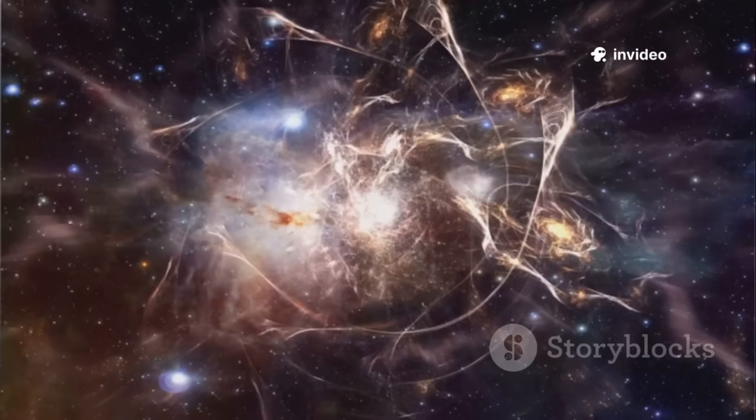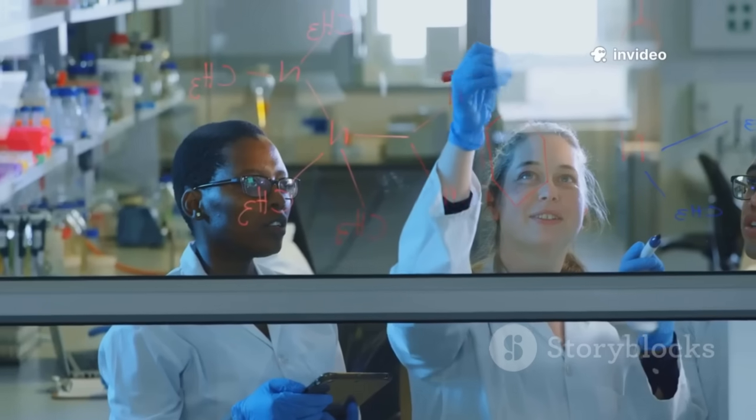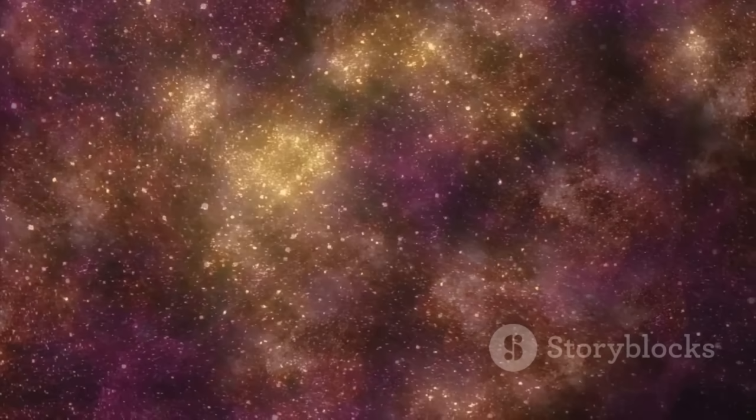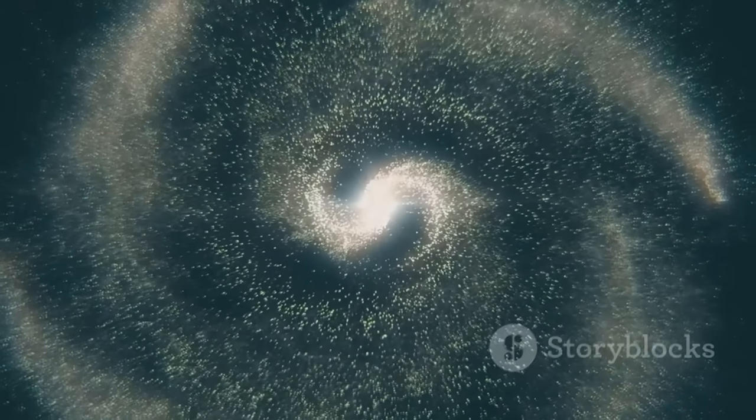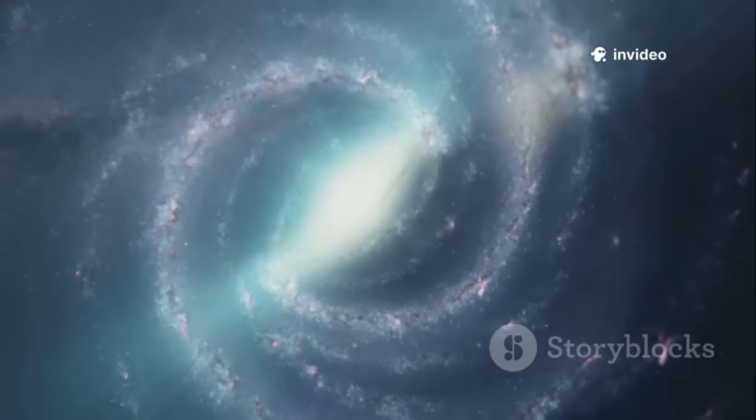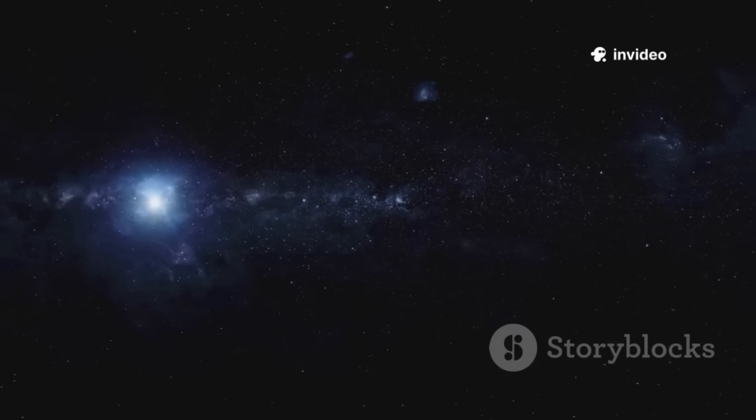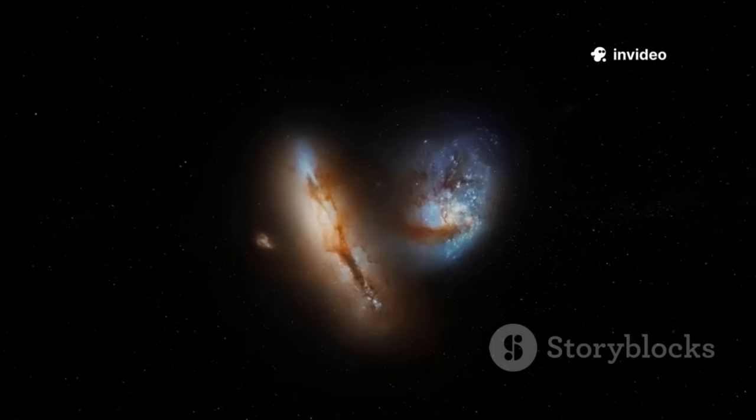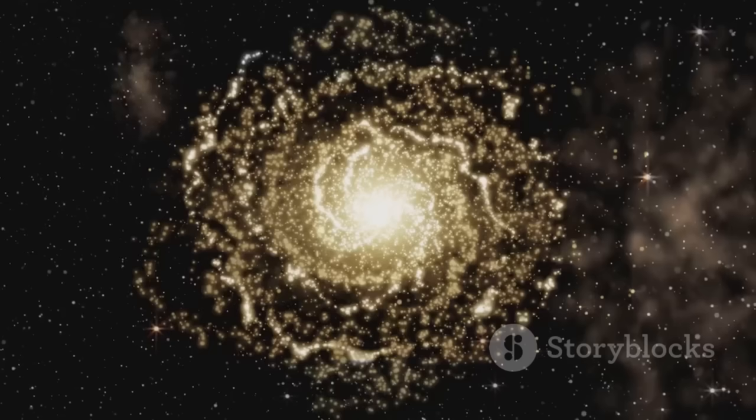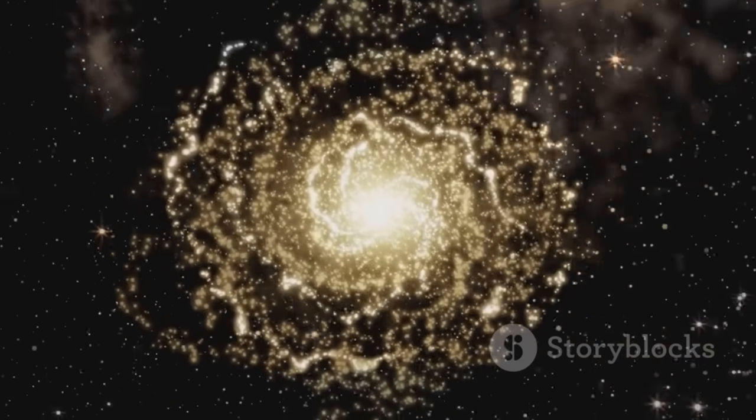Scientists were thrilled, finally seeing the universe's first galaxies. But these weren't the small, chaotic protogalaxies expected. The little red dots were too bright, too numerous, and surprisingly well-formed. To shine so brightly at such distances, they had to be massive. Billions of stars in mature structures. It was like finding a fully grown tree among seedlings.